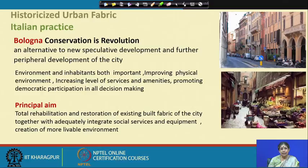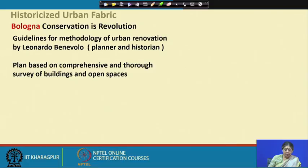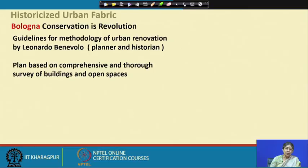Bologna's conservation plan is very well known. The guidelines for the methodology of urban renovation were developed by Leonardo Benevolo, a very well-known planner and historian. The plan he formulated was based on a comprehensive and thorough survey of buildings and open spaces. When talking about revitalization or rehabilitation of historic towns, we are not only talking about monuments — the information about the entire urban fabric has to be there. It is based on a thorough survey of the buildings, open spaces, and the activities, state of preservation, importance, and significance.